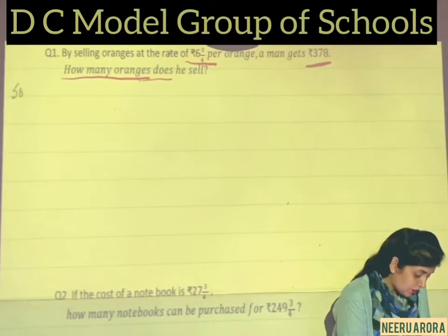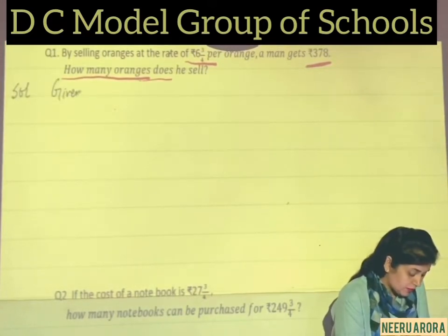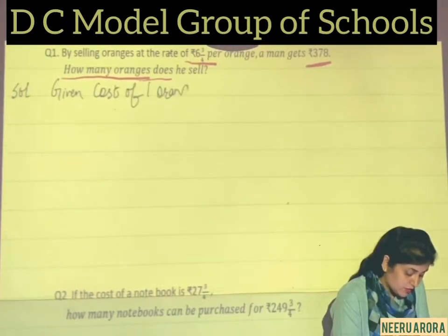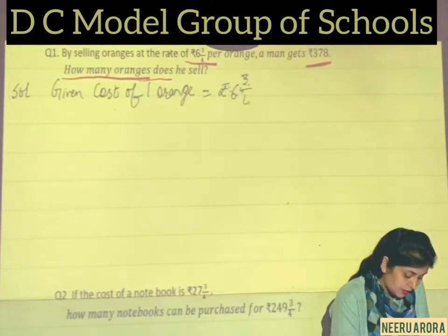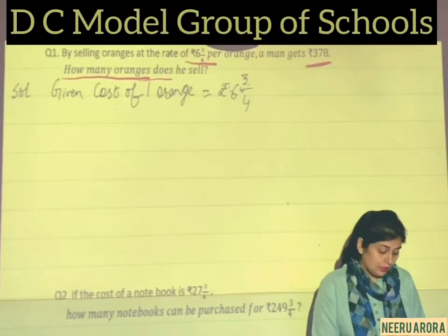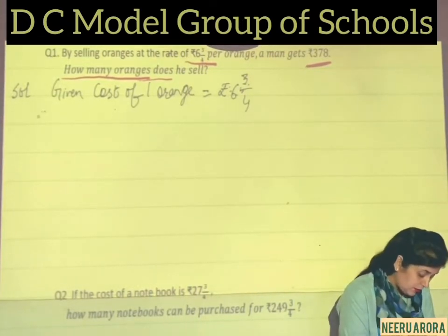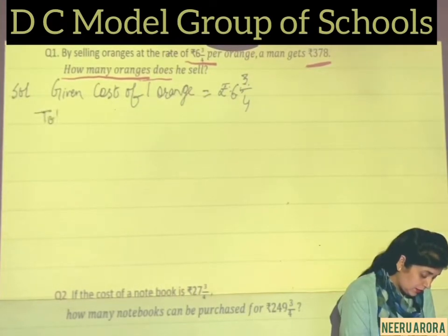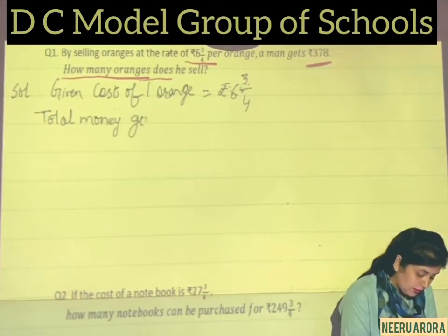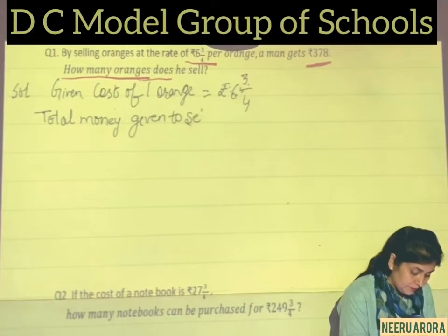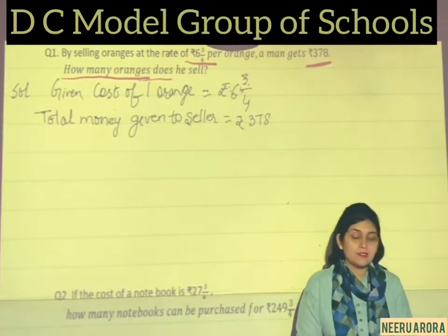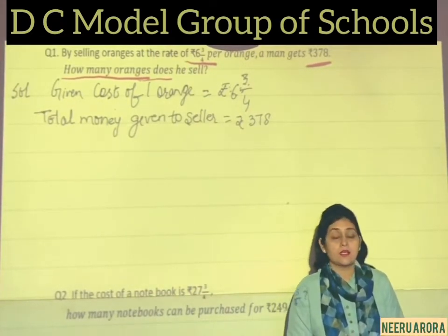So first we write what is given. Given: cost of 1 orange is Rs. 6 3/4. Total money given to the seller is Rs. 378. The question asks how many oranges does he sell. Let's take a small example to understand the method.